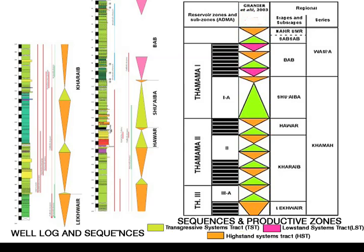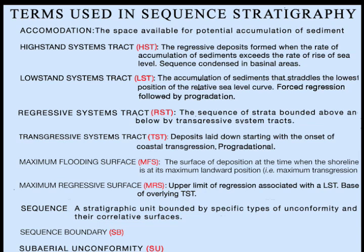Sequence stratigraphy is widely used in exploration for petroleum, and as shown on this slide from a published paper, colored triangles are used to depict the sequences and their limits. The official categorization of the several elements of sequence stratigraphy is still under discussion, but the probable outcome is indicated on this repeated summary of the more widely used of its terms.